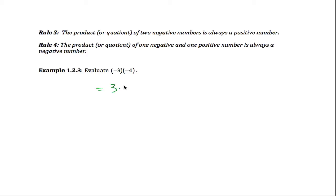Specifically, this will be equal to positive 3 times positive 4. And positive 3 times positive 4 is just equal to 12. So, what we have is that negative 3 times negative 4 is equal to positive 12.